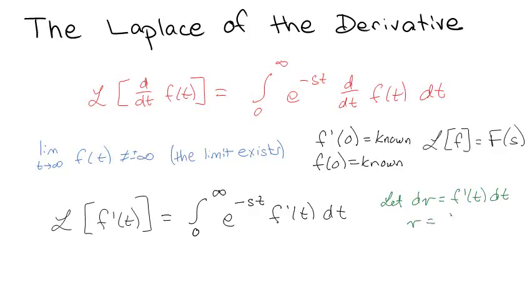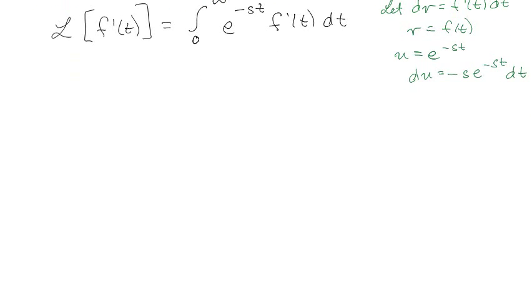So I'm going to let dv equal f prime of t dt, so that means v is just equal to f(t), and I'm going to let u equal e to the minus st, so du is minus s e to the minus st dt. It's calculus!